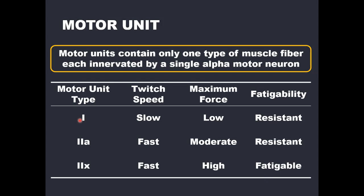As you can see in this table, as we go from type 1 to type 2a to type 2x motor units and fibers, twitch or contractile speed gets faster, maximum force gets higher, and fatigability gets higher — so fatigue resistance gets lower. Type 1 and 2x are on the ends of a spectrum with type 2a somewhere in the middle; it's considered an intermediate fiber.